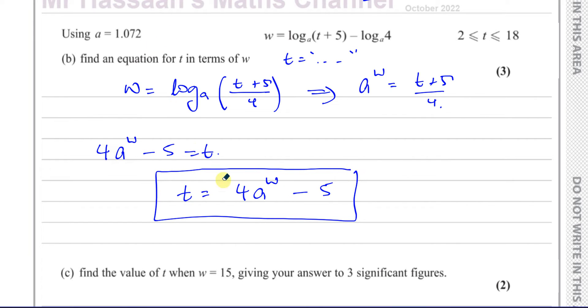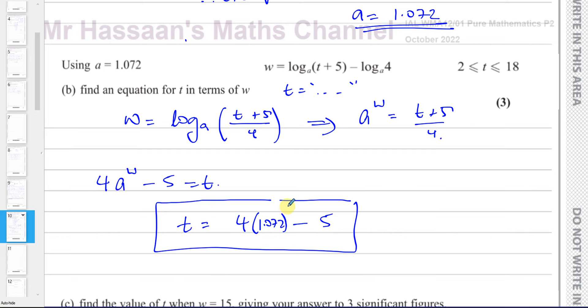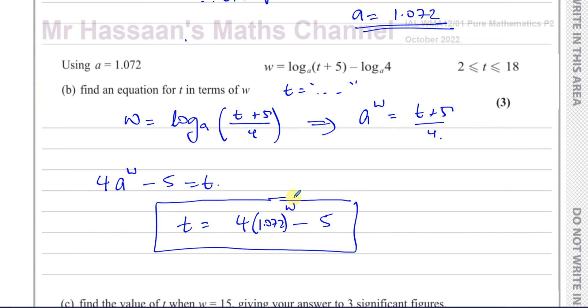No. They said using a equals 1.072. So what I'll do is I'll replace the a with 4 times 1.072 to the power of w. Okay. So it's 4 times 1.072 to the power of w. So there's the answer to part b.